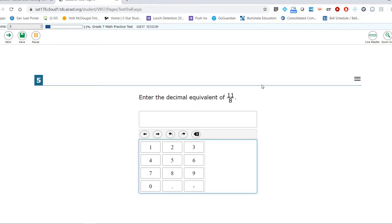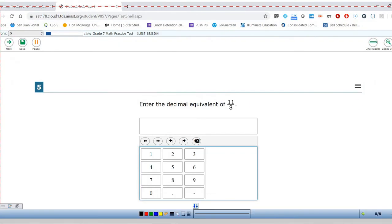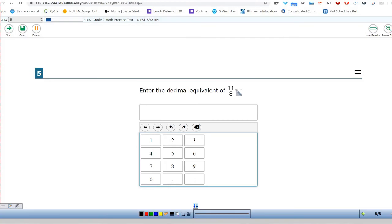Alright, enter the decimal equivalent of 11 eighths. So any fraction at all can be changed to a decimal by dividing the top by the bottom. So one option is to do 11 divided by 8 and see what we get. But let's go ahead and see what this would be if we changed it to a mixed number. So 8 goes into 11 one time and 11 minus 8 is 3. So this is 1 and 3 eighths. So actually I know that when I make this as a decimal, it's going to be 1 point something.